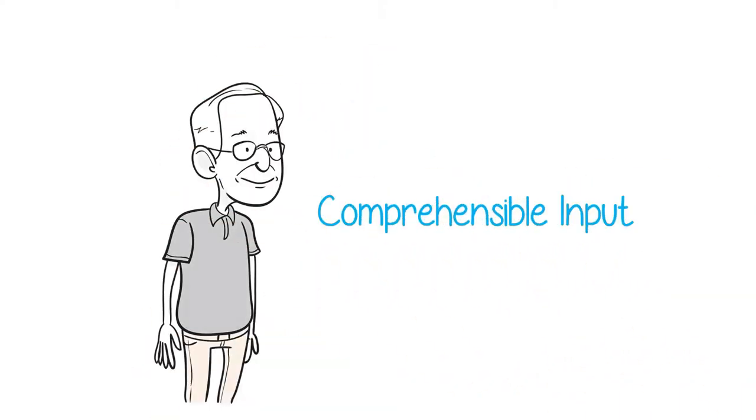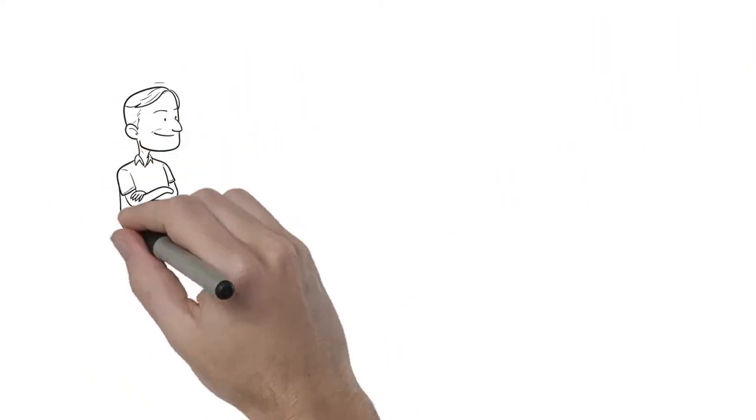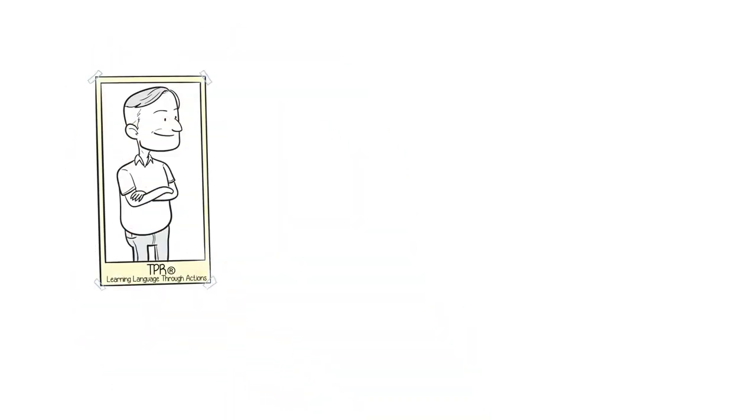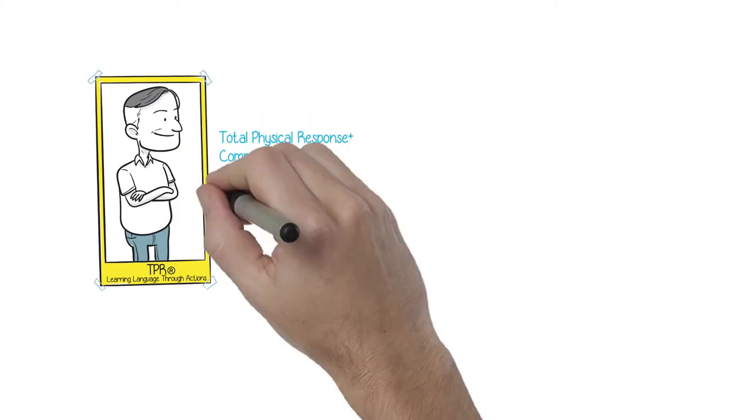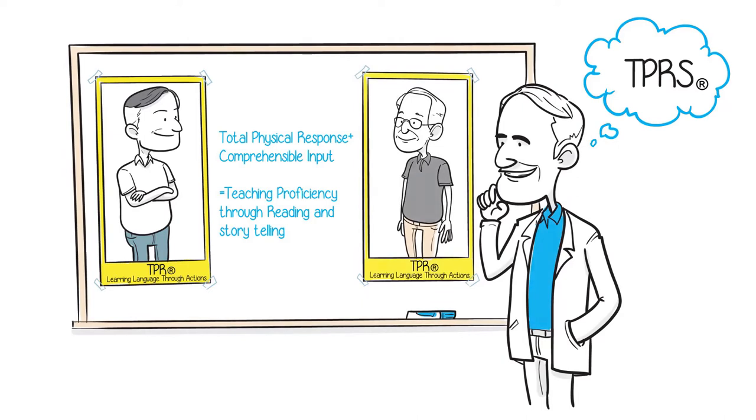He started using comprehensible input-based methods in the 1980s because he read about the second language acquisition theories of Dr. Stephen Krashen. Blaine was also initially influenced by the work of Dr. James Asher, who focused on learning language through actions. Blaine went to work experimenting in his own classroom for many years until arriving upon what is known as teaching proficiency through reading and storytelling.